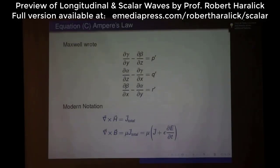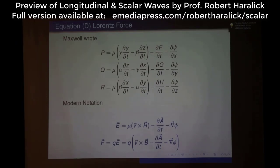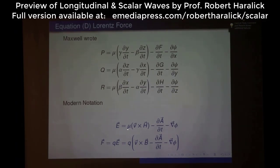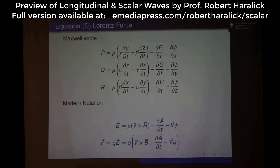Ampere's law: del cross B equals mu J, where J is the total current. You can see how he had to write three equations like this and we write one equation like that. The Lorentz force is actually not typically included in the four Maxwell's equations; it's included as a fifth equation that also is very important within the physics. Maxwell wrote it, and in the modern notation you would write the electric field as mu, the velocity vector times H, minus the partial derivative of the magnetic vector potential, minus the gradient of the electric potential.